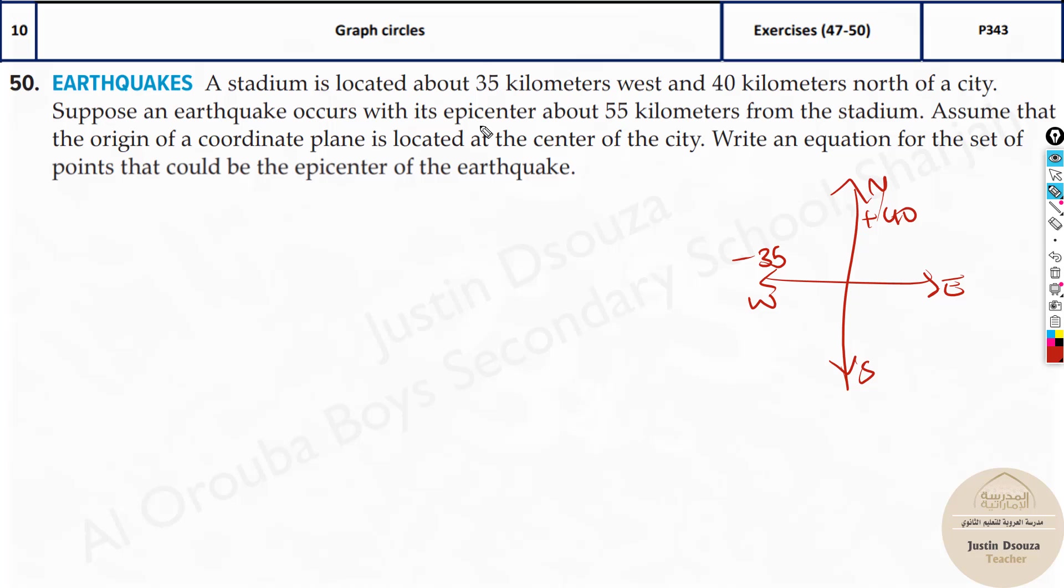Suppose an earthquake occurs with its epicenter about 55 kilometers from the stadium. Assume that the origin of the coordinate plane is located at the center of the city. Write an equation for the set of points that could be the epicenter. What they mean is that's the radius, 55 kilometers away. So use (x - h)² + (y - k)² = r². So x minus, now over here will be plus 35 whole squared plus (y - 40)² equals 55 squared.